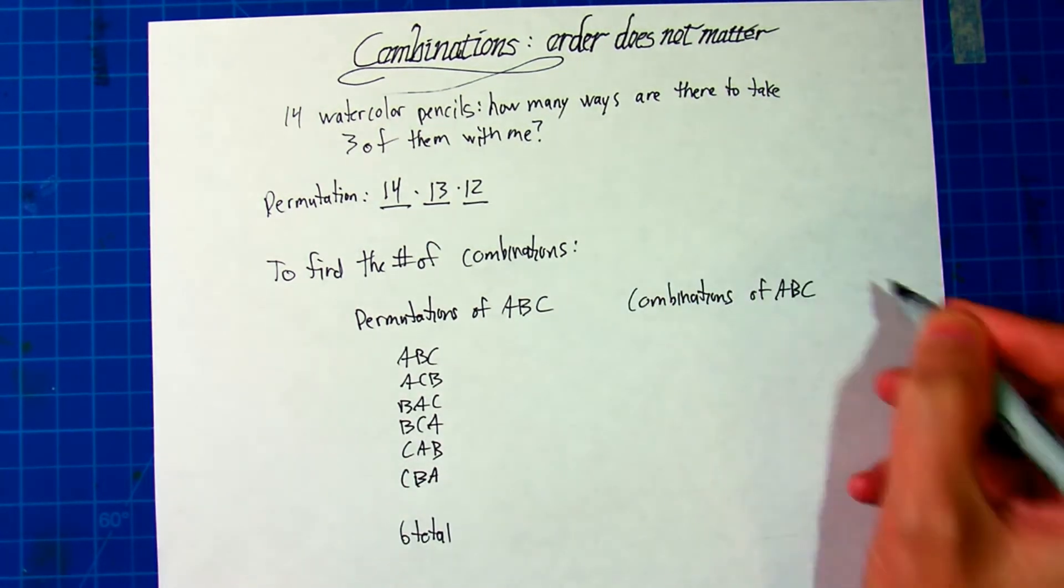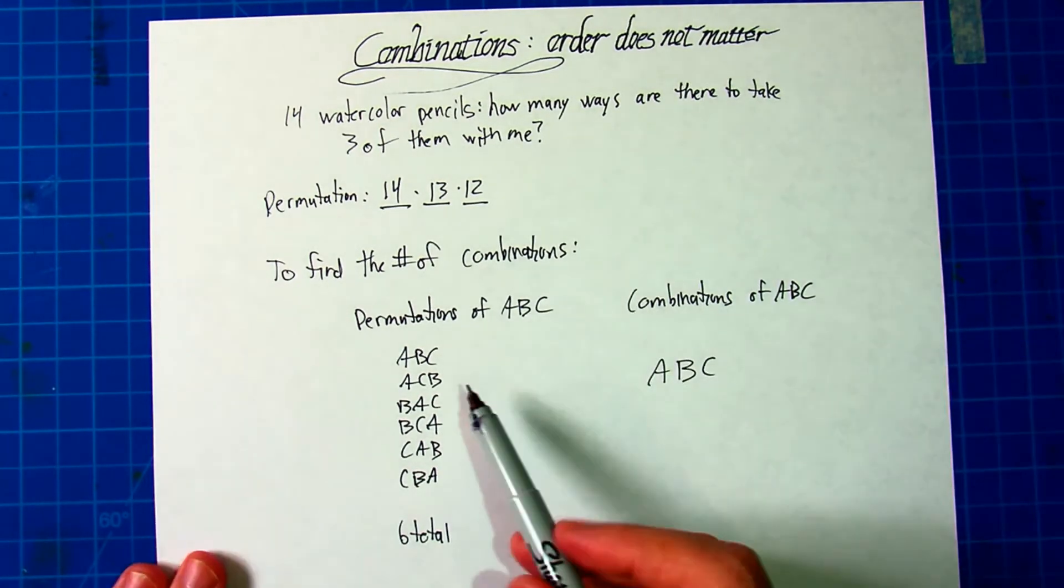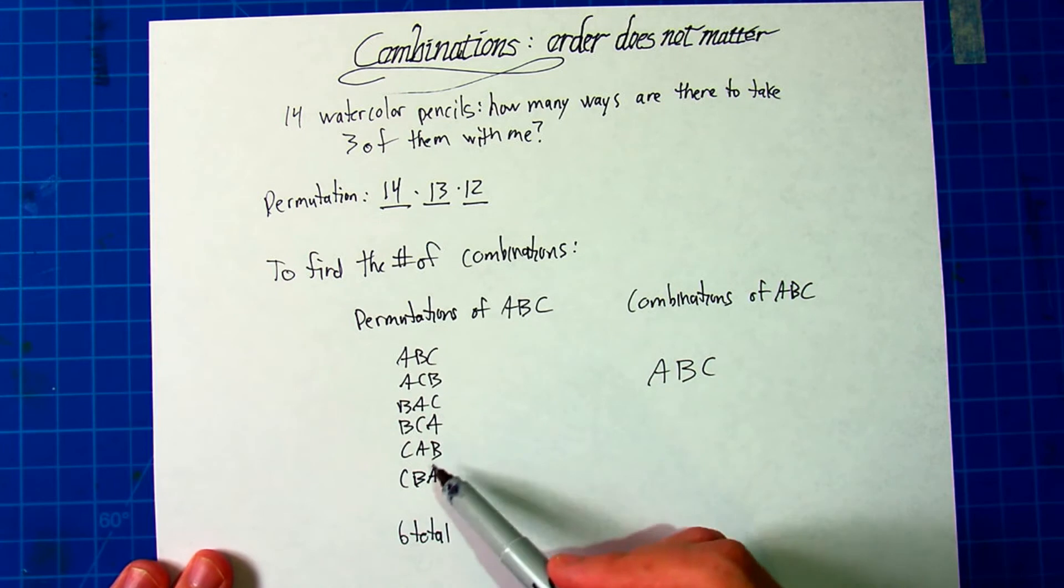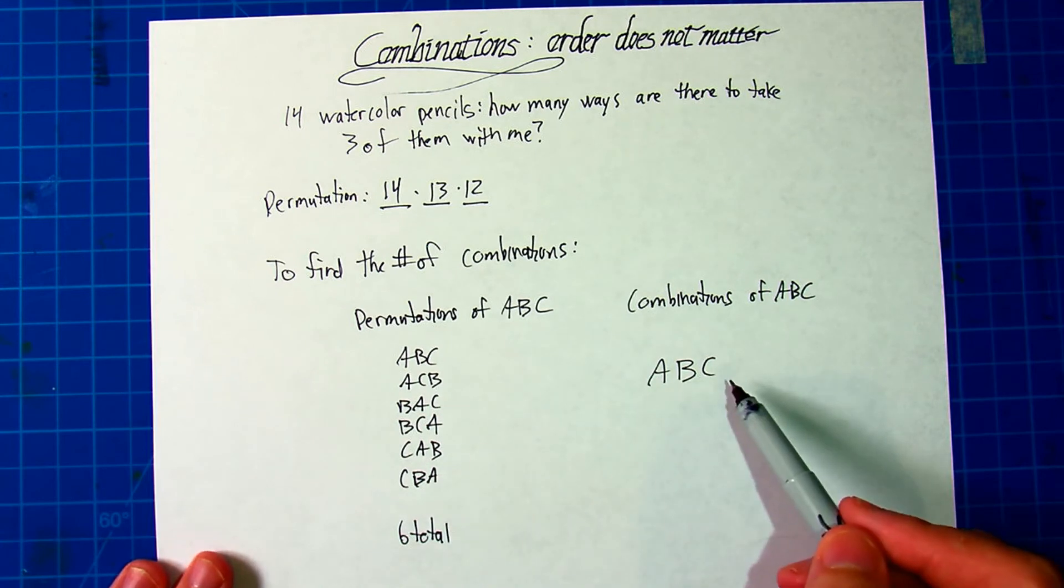Permutations: ABC, ACB, BAC, BCA, CAB, CBA. There's six in total. Combinations of A, B, C, well, it's just ABC. It doesn't matter how you write it. These are all equivalent to this when order doesn't matter.